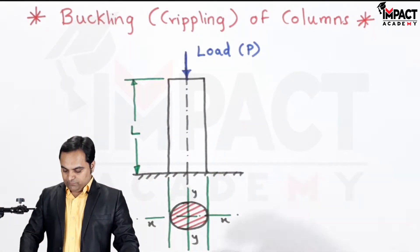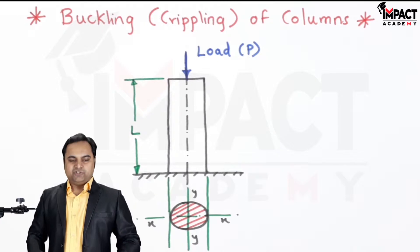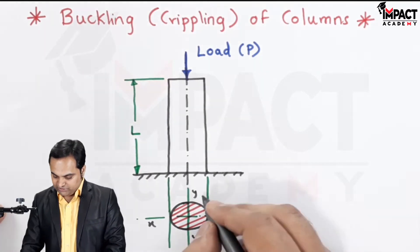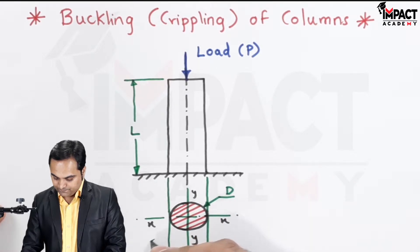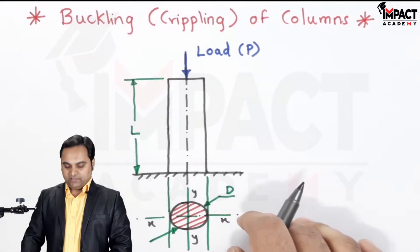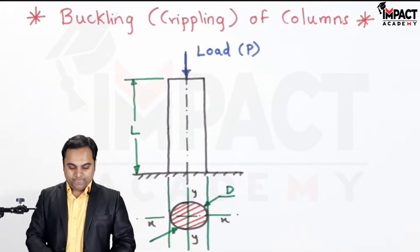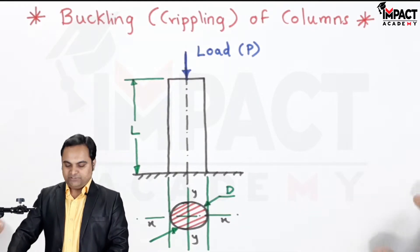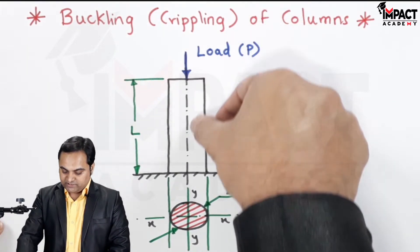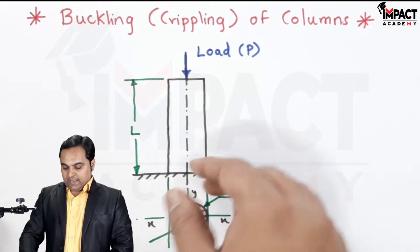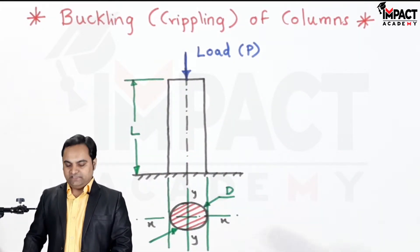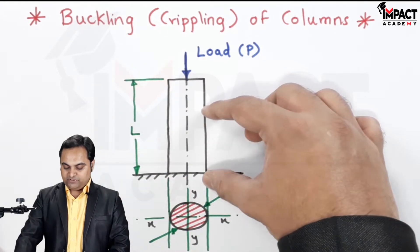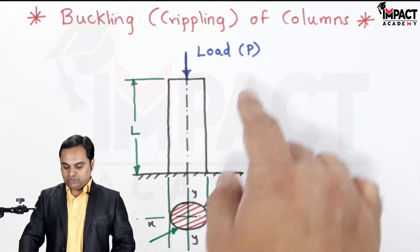Now, here there is a column. I am assuming it to be a circular column, that is the cross section is circular having diameter capital D, and the length of the column is capital L. Now, this column is subjected to an axial load as we can see from the figure, and because of this axial load there are possibilities that if the length of the column is short, then under the action of this axial load the column may get compressed.